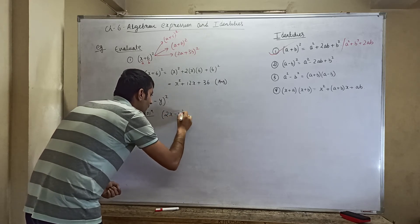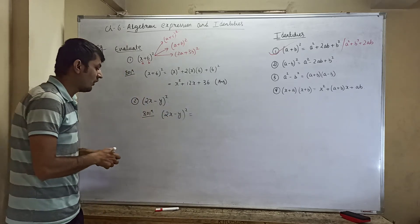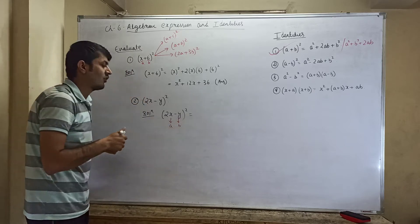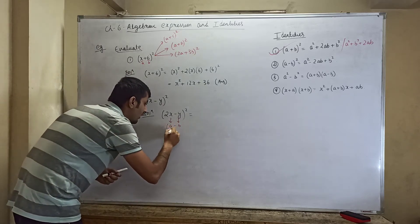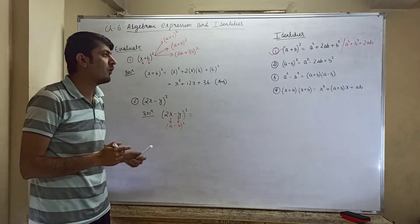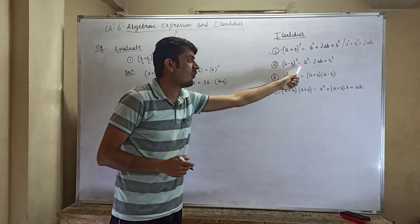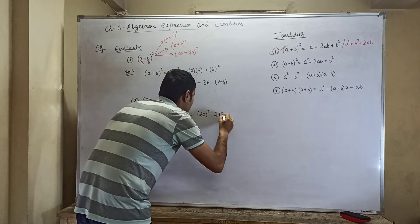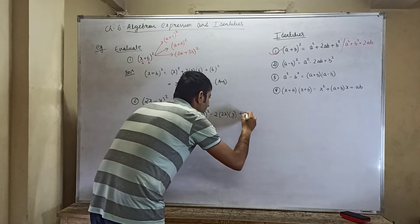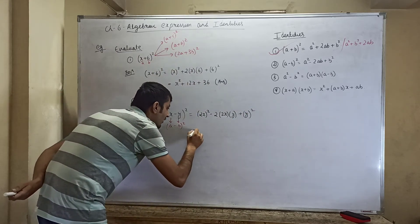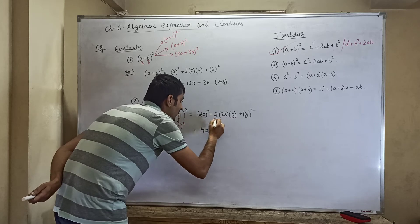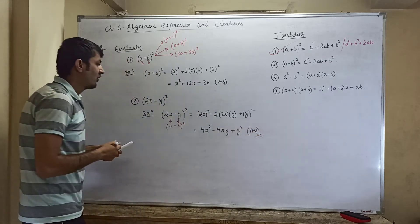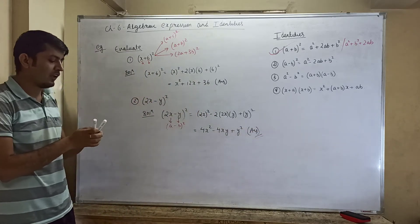Solution: for (2x − y)², your a is 2x and your b is y. Using a squared minus 2ab plus b squared, it becomes (2x)² minus 2 × 2x × y plus y squared. Simplifying: 4x squared minus 4xy plus y squared. So you can easily solve this type of problem.